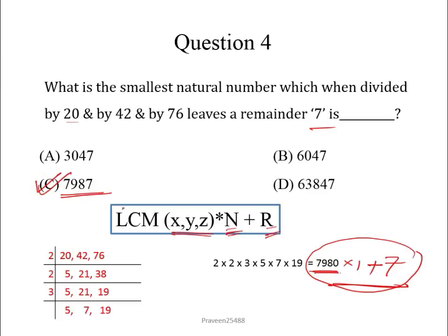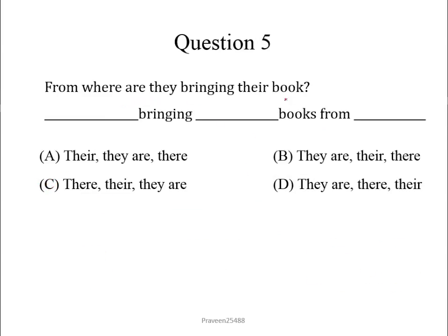Now question number 5. From where are they bringing their book? We have to complete this sentence in the blanks. First will come 'they are'. Here 'they' is the subject and 'are' is the helping verb. They are bringing 'their' (T-H-E-I-R). 'Their' is used as something associated with people or things.